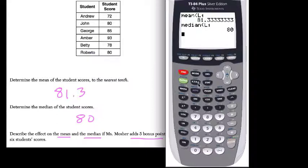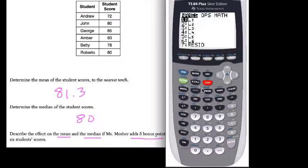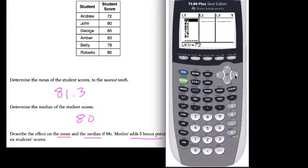So if I hit second, list, hit stat, edit, let's make a second list. We add five to all of these: instead of 72 I get 77, add five, 80 becomes 85, 85 becomes 90, 93 becomes 98, 78 becomes 83, 89 becomes 94, and 80 becomes 85.